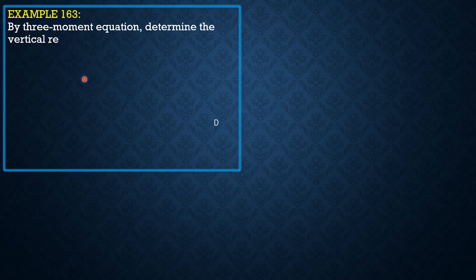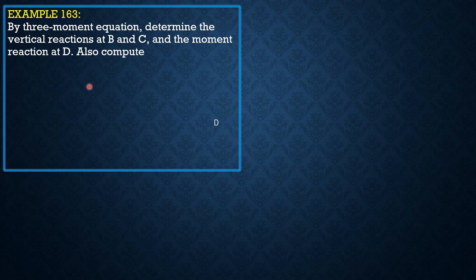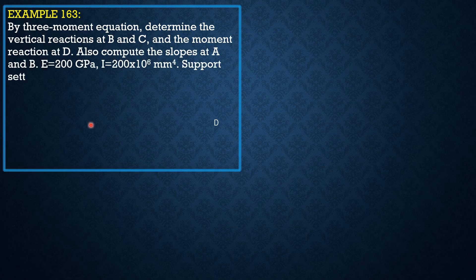By the three-moment equation, determine the vertical reactions at B and C, and the moment reactions at D. Also, compute the slopes at A and B. The modulus of elasticity for the beam is 200 gigapascals.